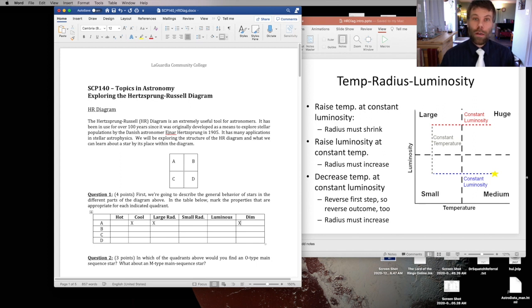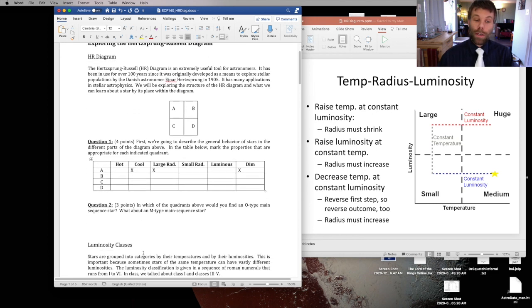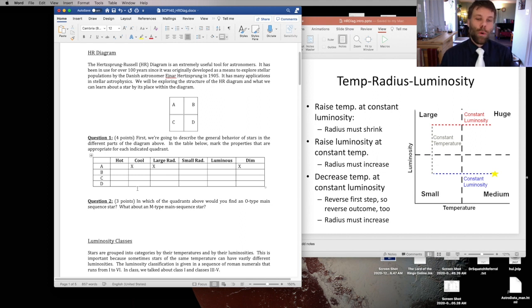But the general point here is that you want to mark the appropriate column in each of the three quantities, temperature, radius, and luminosity. Once you've done that, the next question is going to ask you, in which of those four quadrants would you find an O-type main sequence star, and then an M-type main sequence star?